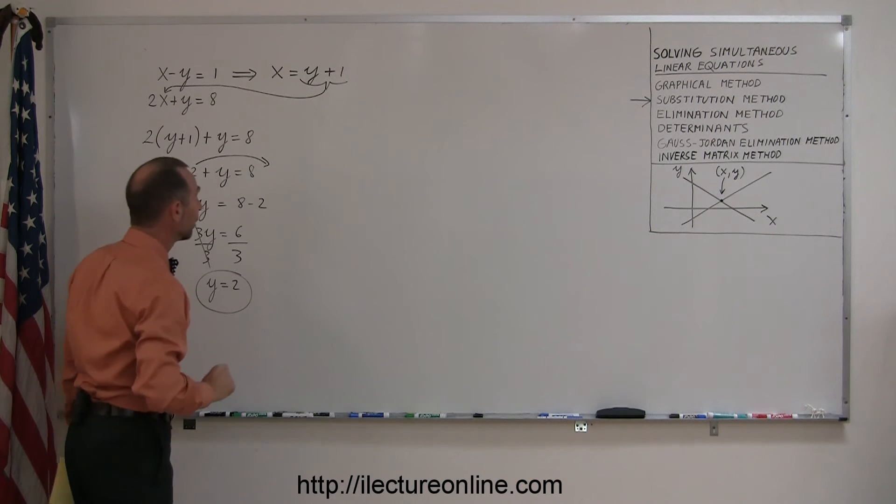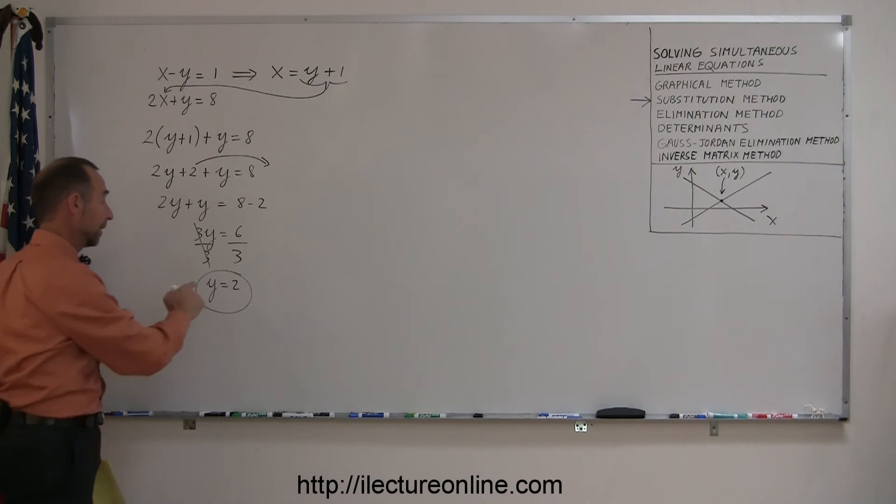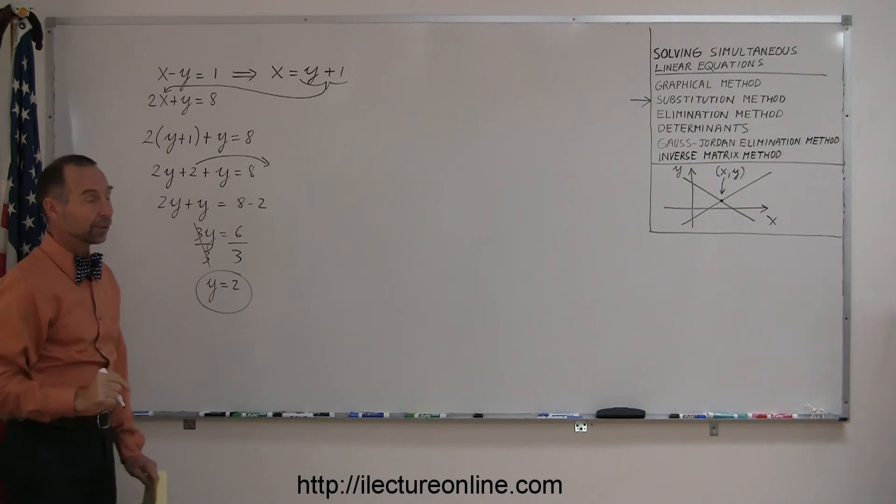So now that means, looking for the point where the two lines cross, the y coordinate is most likely going to be 2.